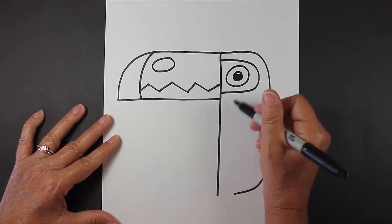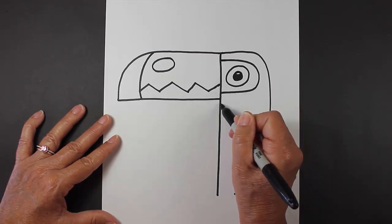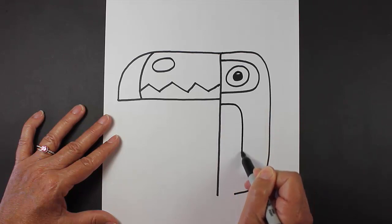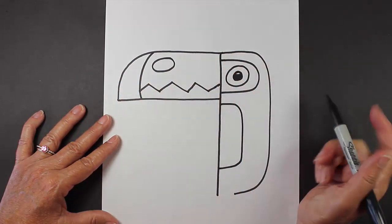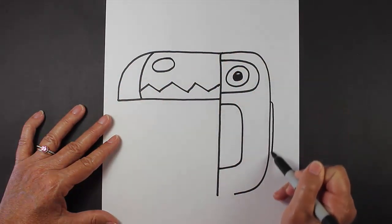For his body, for our toucan's body, we're going to make a shape that looks like this, and that's one of his wings. He's kind of turning his head this way, looking this way, and his body's facing this way, and his other wing is over here.